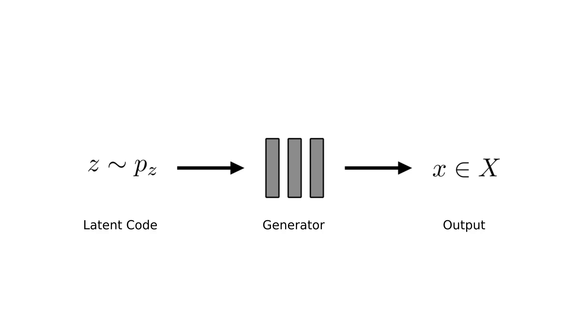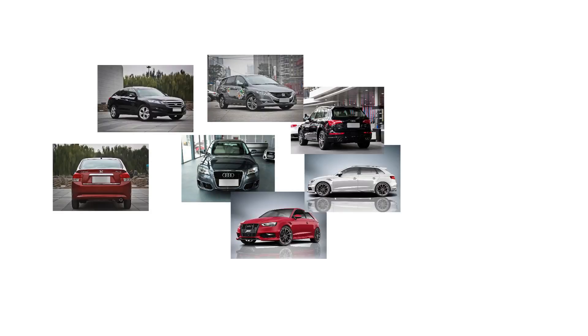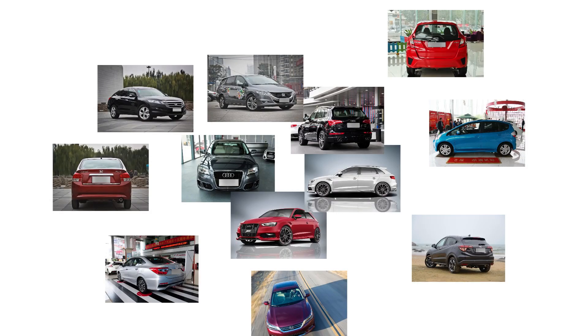Let's assume that our domain are images of cars. Then we will train our generator model on thousands of images of cars.